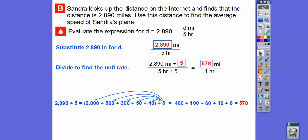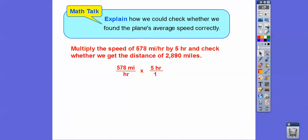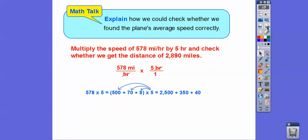The plane's speed was 578 miles per hour. To check whether we found the average speed correctly, we can multiply our answer — 578 miles per hour — by five hours to see if we get 2,890 miles. Notice the hours cancel, leaving miles. Using the distributive property: 500 × 5 = 2,500, 70 × 5 = 350, 8 × 5 = 40. Adding those together gives us 2,890 miles — correct!